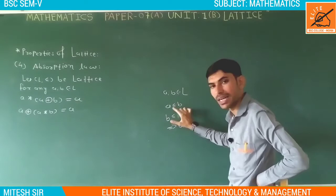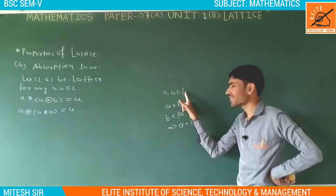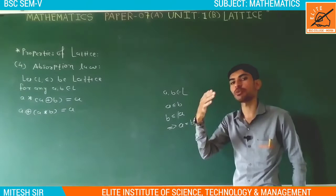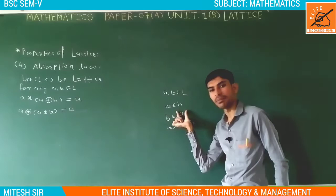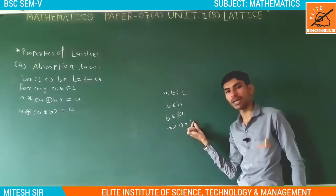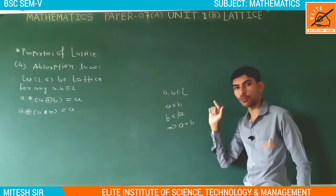Because our set is a lattice, and as we know, every lattice is a poset. For a poset, the relation is reflexive, anti-symmetric, and transitive. So, if A is related to B and B is related to A, then by anti-symmetry, A is equal to B. So to prove A is equal to B, we need to prove A is related to B and B is related to A.